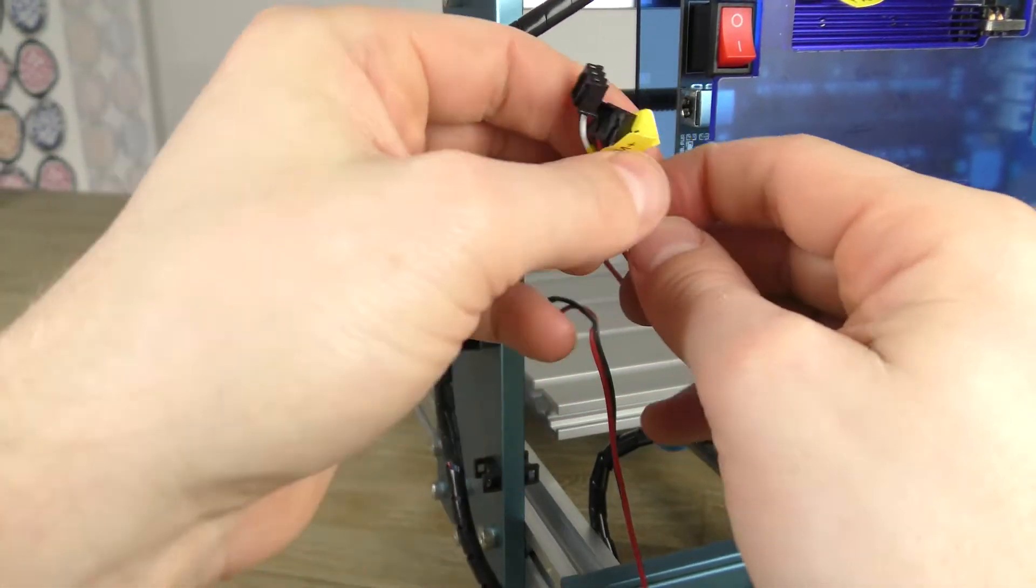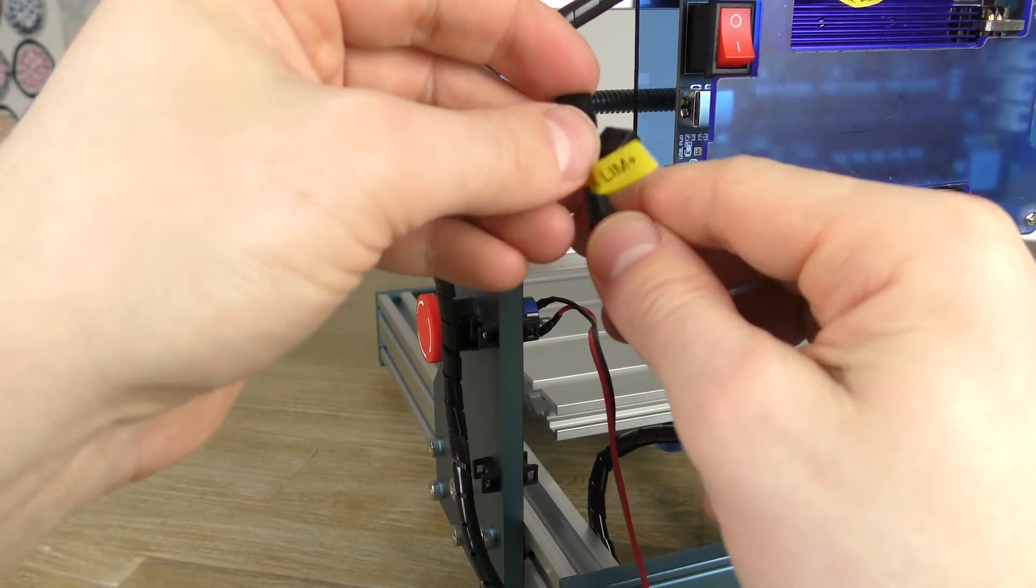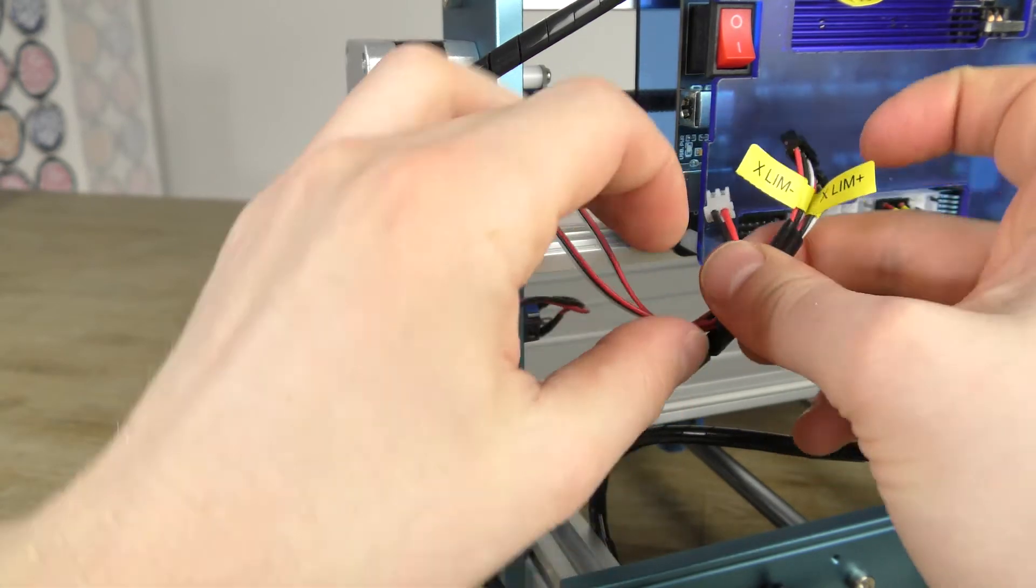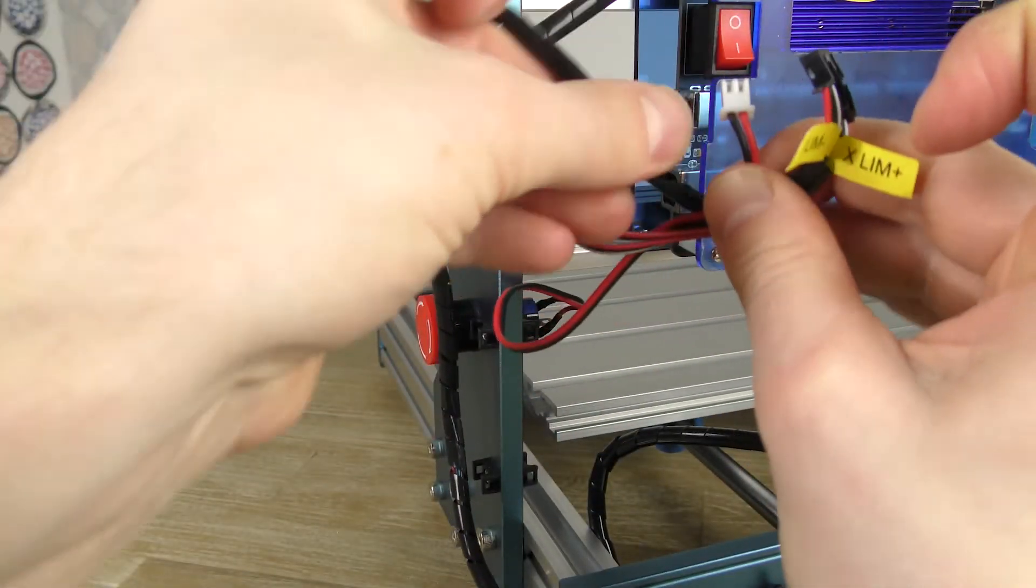I saw in other building videos that SainSmart used different kind of sleevings in the past. The spiral ones makes it possible to combine multiple cables and let them split up later.